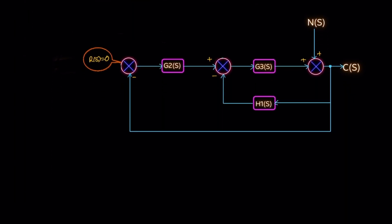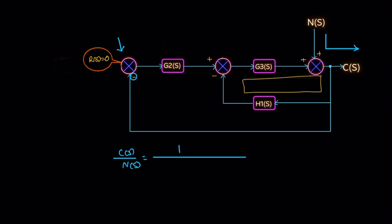First we solve for R(s) = 0. If R(s) = 0, there is no input, but the feedback is negative. Then C(s)/N(s) equals the forward path gain as numerator. For this situation, the forward path gain depends on this path only, so there are no blocks in this path — just one as the numerator — divided by the feedback. There are two feedback paths: the first path has a negative sign, so it is negative feedback, giving positive one plus the product of H1(s) and G3(s).